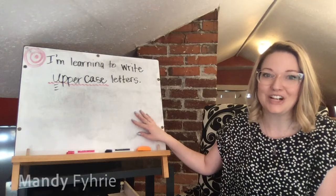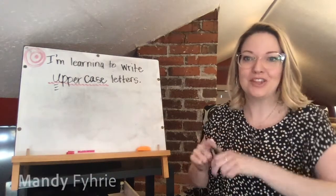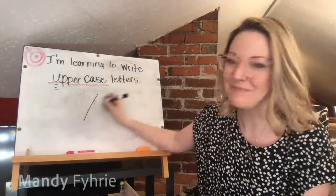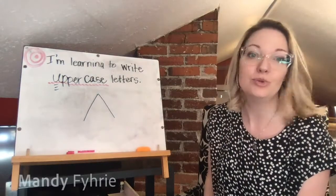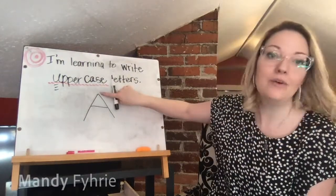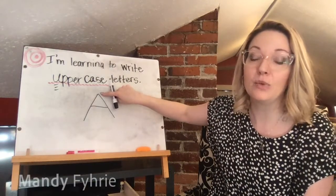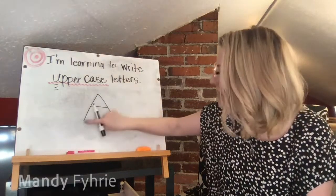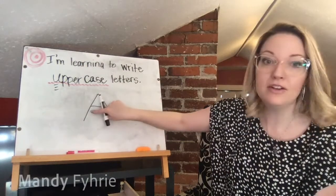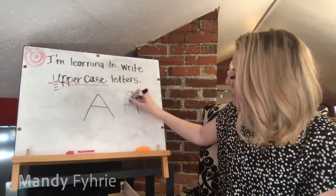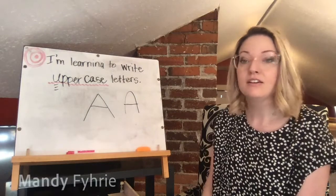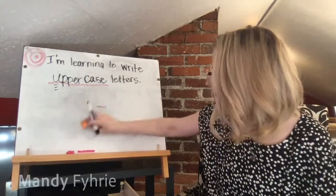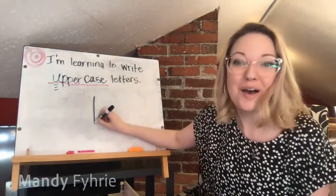The first letter our alphabet starts with is A. To write capital A: big line down, hop to the top, big line slides down, up to the middle, little line across. Notice how it's pointy at the top — that's because we pick up our marker. We pick up our marker a lot with capital letters. Make sure your capital A's are pointy at the top like a mountain, not curved.